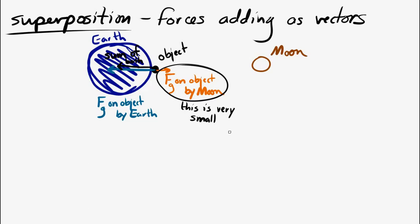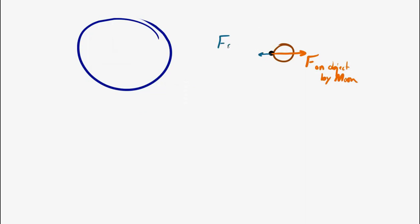Now let's think about an object on the surface of the Moon. An object on the surface of the Moon will experience a force caused by the Moon and a force caused by the Earth. The force by the Moon is going to be much greater because the object is much closer to the Moon. Yes, the Moon has less mass, but the object is so much closer that the Moon's force is greater. The total force is going to be toward the Moon.